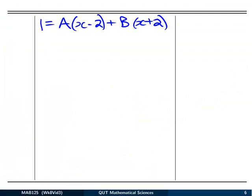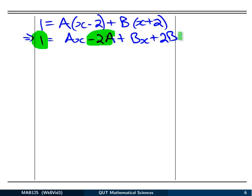So there we've got it: 1 is A times (x-2) plus B times (x+2). Now what we can do is expand that right hand side out. So we've got Ax - 2A plus Bx plus 2B. Now notice that what we've got there is a constant 1 on the left. There's some constants here on the right as well.